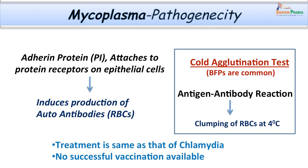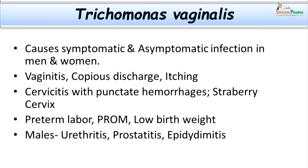Let us now move on to another parasite: Trichomonas vaginalis, which can present as non-gonococcal urethritis. It causes symptomatic and asymptomatic infections in both men and women. It is usually known to cause vaginitis with copious discharge, itching, and cervicitis. The cervix is inflamed severely, with necrotic inflamed patches and small punctate hemorrhages — this is described as the strawberry cervix, which can be seen on per-vaginal examination. Trichomonas vaginalis can also cause complications like preterm labor, premature rupture of membranes, and low birth weight. In male patients it presents with urethritis, prostatitis, and epididymitis.